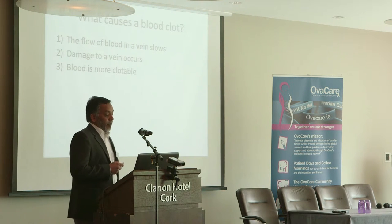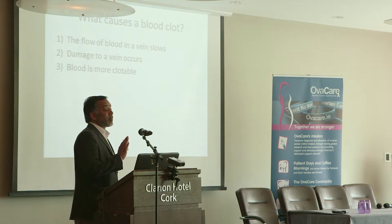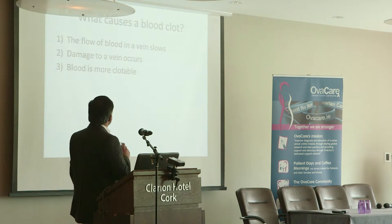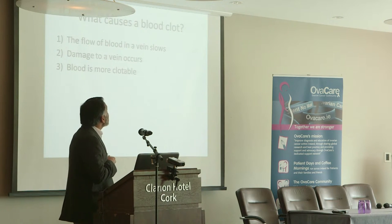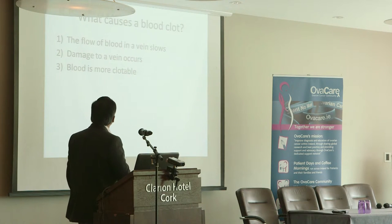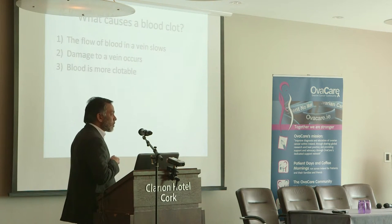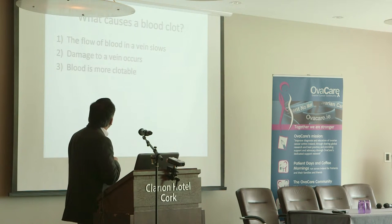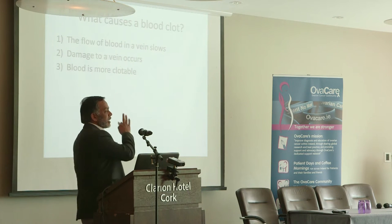What causes a blood clot? Rudolf Virchow, a German scientist and pathologist 150 years ago, gave us this triangle of three causes. These are the causes of clot in the veins, and for more than 150 years we have not changed this because it is still true. Number one: flow of blood in a vein slows. Number two: damage to a vein. Number three: blood is more clottable. Wherever there is a clot in the vein, either one or a combination of these three will be present.